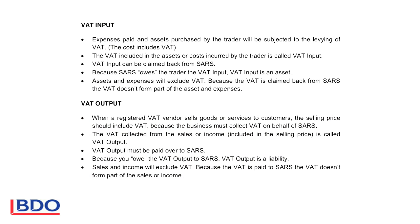If we look at VAT input, on all expenses that you pay, whether it's water, electricity, telephone, rent, you will pay VAT. The VAT is included in the cost for the expense. If you purchase assets, whether it is a delivery vehicle, furniture, equipment, you will pay VAT because the VAT is included. VAT included in assets and costs incurred by the trader is called VAT input.